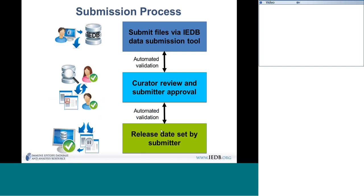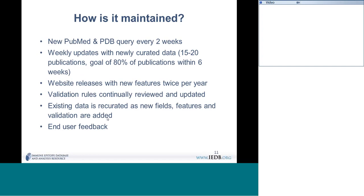The submitter defines the release date, and often this is because they want their submission to come out at the same time as their publication. For example, authors may study 3,000 epitopes, submit all 3,000, but publish only 10 — we'll make the submission visible on our website linked to that publication as a related dataset, and we'll hold the submission until the appropriate time. The weekly updates cover 15 to 20 publications.